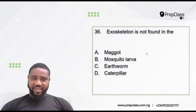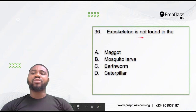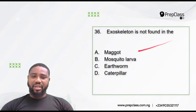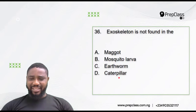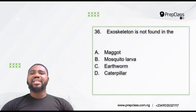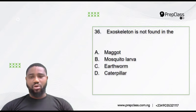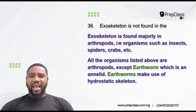Question 36: Exoskeleton is not found in which of these — a maggot, a mosquito larva, an earthworm, or a caterpillar? The exoskeleton is the skeleton found outside the body of a living organism, most especially invertebrates. Exoskeleton is mostly found in the group of invertebrates called arthropods.